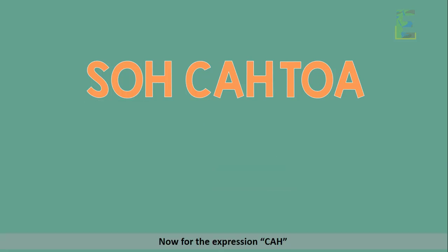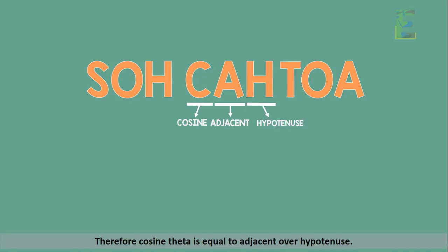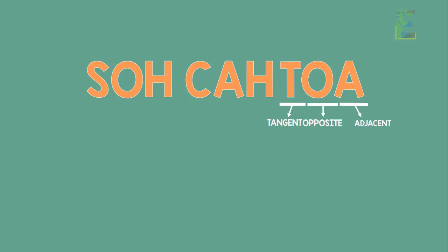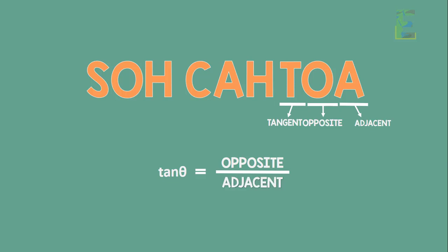For CAH: C stands for cosine, A stands for adjacent, and H stands for hypotenuse. Therefore, cosine theta is equal to adjacent over hypotenuse. And lastly for TOA: T stands for tangent, O stands for opposite, and A stands for adjacent. Therefore, tangent theta is equal to opposite over adjacent.